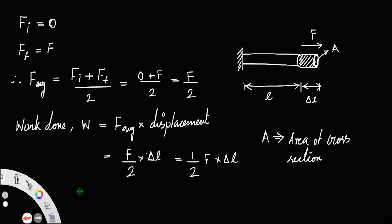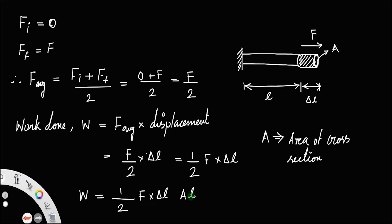So W is equal to half F into delta L. Now, multiply and divide by the term AL — that is area into length — so W equals half times F into delta L times AL divided by AL. Since AL and AL cancel, it remains half F into delta L.